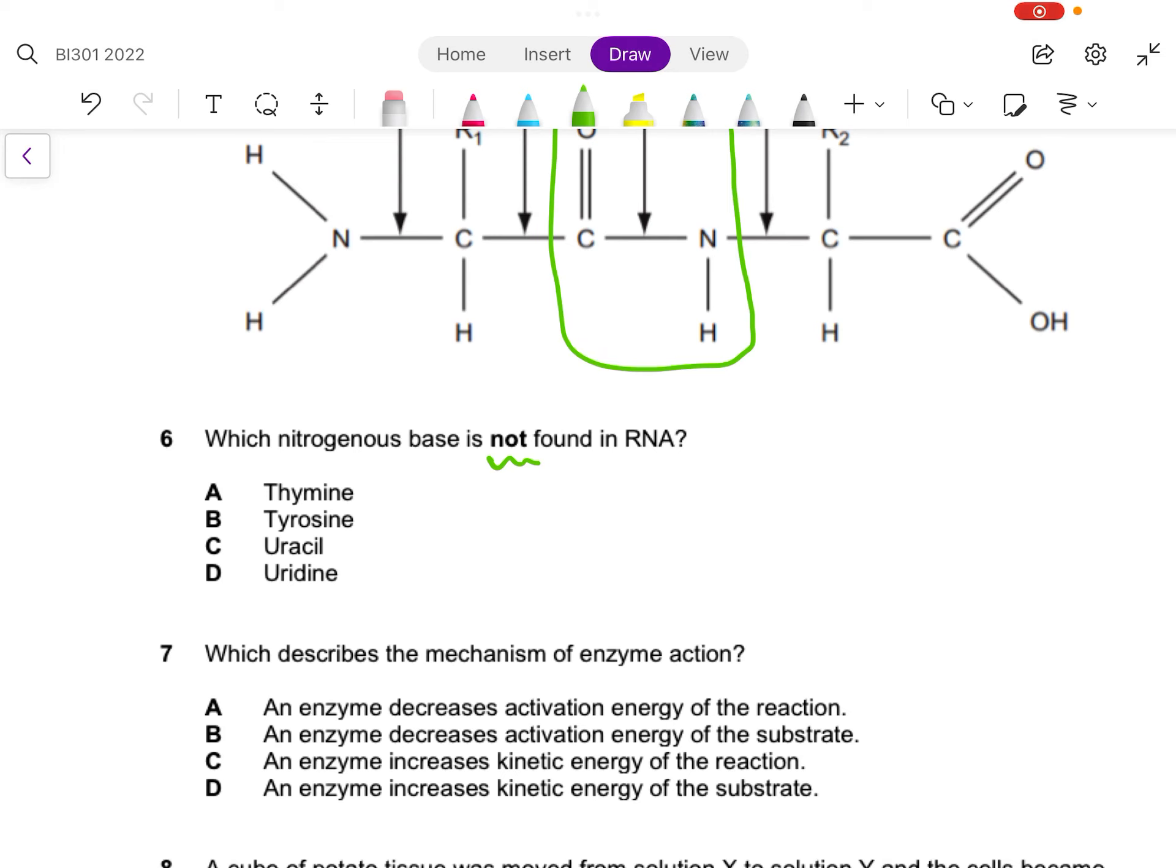Let's go to question six: which nitrogenous base is not found in RNA? First and foremost, let's figure out what's what. Thymine is a nitrogenous base, uracil is a nitrogenous base, tyrosine is actually an amino acid, and uridine is actually uracil, which is the nitrogenous base plus the pentose sugar.